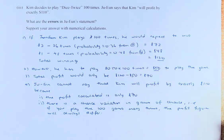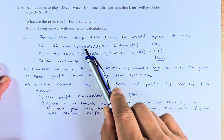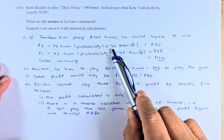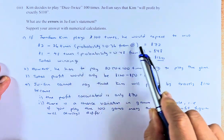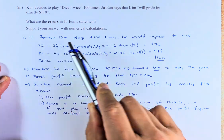Kim decides to play dice twice 100 times. Joo Eun says that Kim will profit by exactly $110. What are the errors in Joo Eun's statement? Support your answers with numerical calculation. So, if Kim plays the game 100 times, he would expect to win $2 36 times, because we calculated that in part A. 0.36 probability times 100 will give us 36 times. And that will give you 36 times 2 will give you $72.